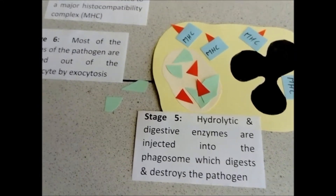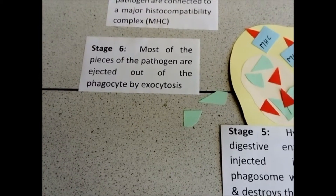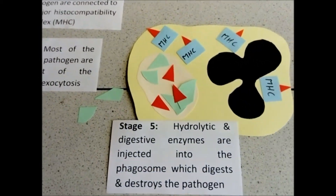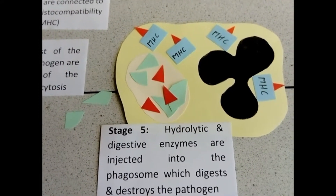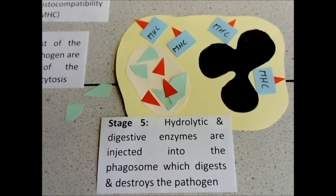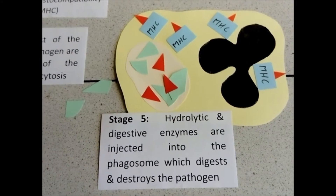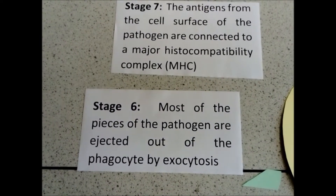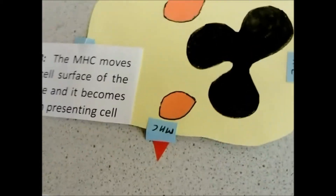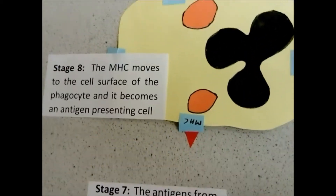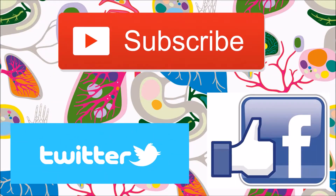The broken up pathogen is mostly ejected by exocytosis. However, the antigens on its surface are connected to MHC, or major histocompatibility complexes, which move to the cell surface of the phagocyte. The phagocyte now becomes an antigen-presenting cell.